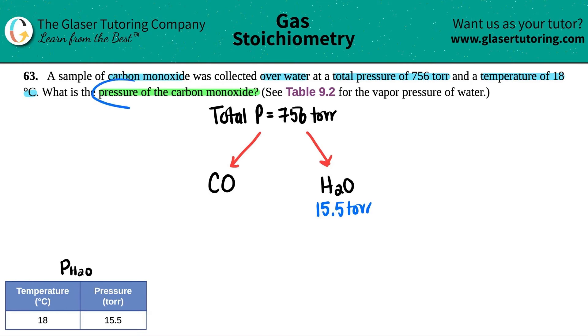Now the question is asking: what is the pressure of carbon monoxide? Well, if the total is 756 torr and only 15.5 torr is designated towards H2O, what's the pressure of CO? You would do the total minus the water pressure.